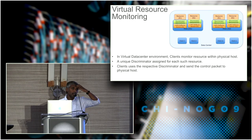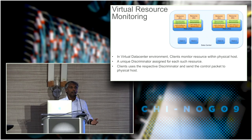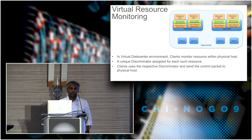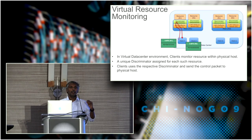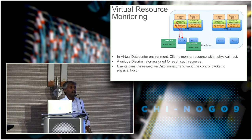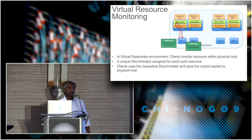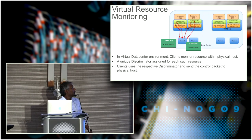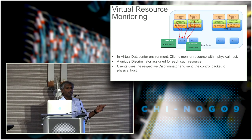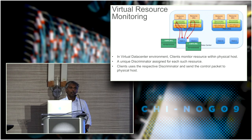Virtual resource monitoring: with virtualization, resources could be a virtual machine, memory, CPU, a container, a CNI, or anything. For each resource that needs to be monitored, a discriminator is assigned and propagated. Any node wanting to monitor resource one uses the relevant discriminator — for example, 01010101. Nodes wanting to monitor resource two use another control packet with the relevant your discriminator.